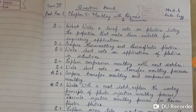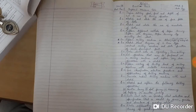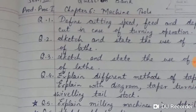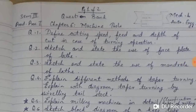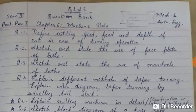Now let's go to chapter number 6 question bank. Question number 1: Define cutting speed, feed, and depth of cut in case of turning operation. Question number 2: Sketch and state the use of face plate of a lathe. Question number 3: Sketch and state the use of mandrels of a lathe.